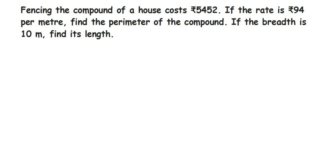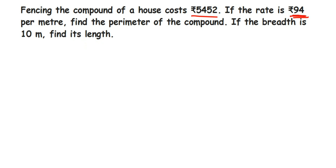Here's a question from perimeter and area — an interesting and different question. The question is: fencing the compound of a house costs rupees 5452. If the rate is rupees 94 per meter, find the perimeter of the compound. If the breadth is 10 meters, find its length. The total cost of the fence is 5452 and they charge 94 rupees per meter.